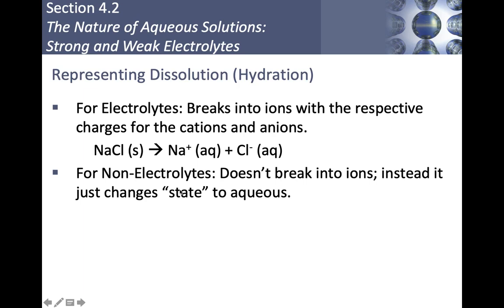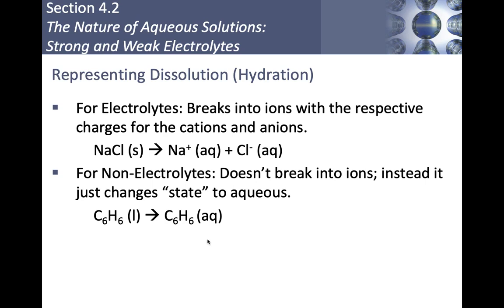For non-electrolytes, instead of breaking into ions, we simply change the state to aqueous but the formula stays intact. For example, benzene dissolving in water: C₆H₆ (l) → C₆H₆ (aq) — same formula, just changed from liquid to aqueous. To tell if something is a non-electrolyte: molecular compounds, things written with molecular formulas — covalently bonded things — are non-electrolytes because they don't form ions in the traditional sense. And notice that writing NaCl correctly required knowing sodium is +1 and chloride is -1.